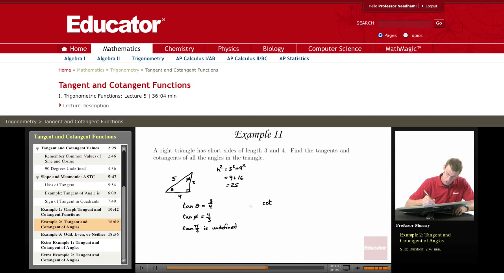So the cotangent of theta, instead of being 3 over 4, will be 4 over 3. And the cotangent of phi, instead of being 4 over 3, will be 3 over 4.